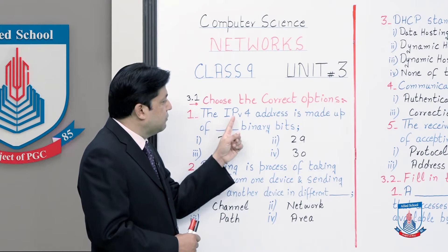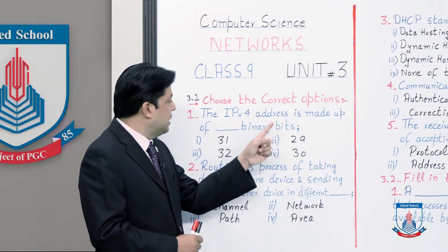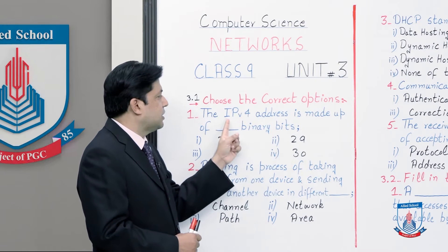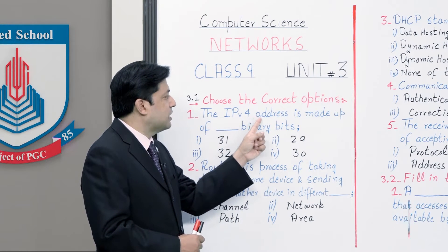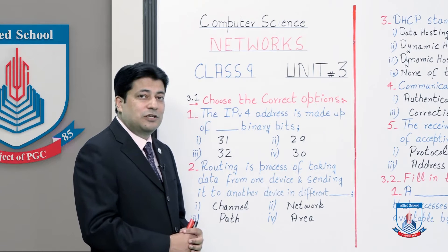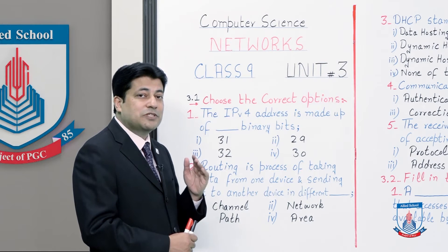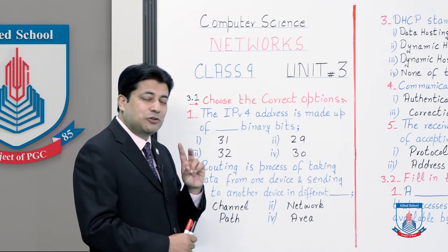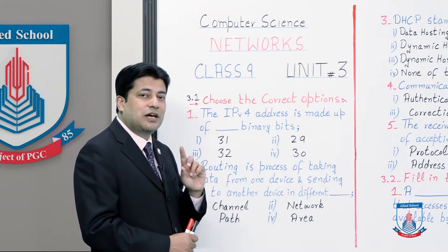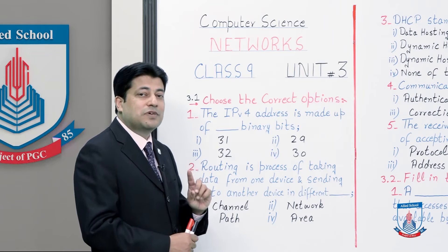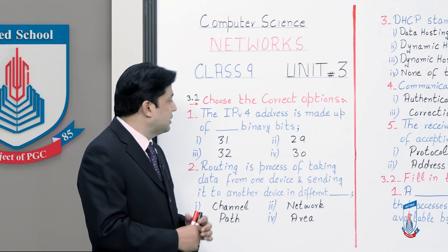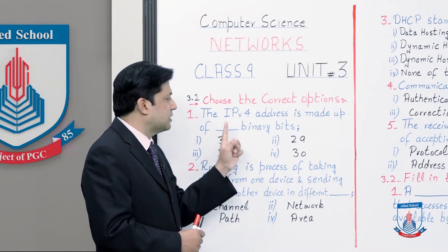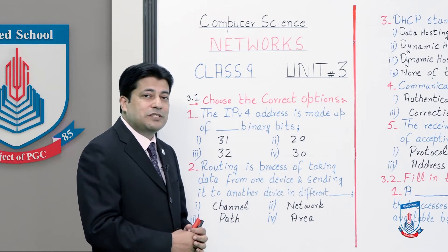The IP version 4 address is made up of how many binary bits? This is straightforward — it is about the IPv4 addressing scheme. We studied two types of IP addresses: IP version 4 and IP version 6. Here the question is about IP version 4, so your selected option must be related to IPv4.